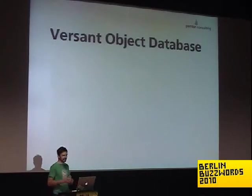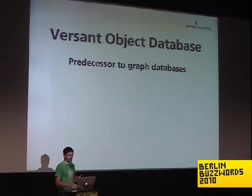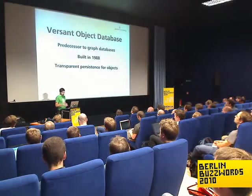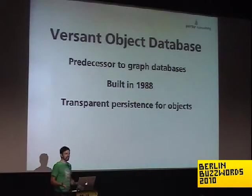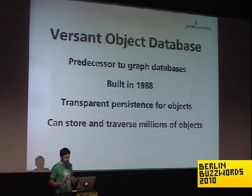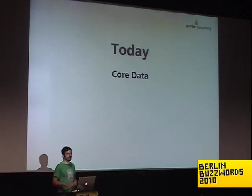The earliest predecessor I could think of was an object database — not exactly a graph database, but a thoughtful predecessor. It offered something like transparent object persistence: you could take a Java or C++ object, dump it in the database, and it would take care of serializing attributes and object associations for you. It's pretty easy to store and traverse millions of objects that way. Core Data ships with Mac OS X as a persistence framework, and in some way it is a graph database, as amazing as that sounds.